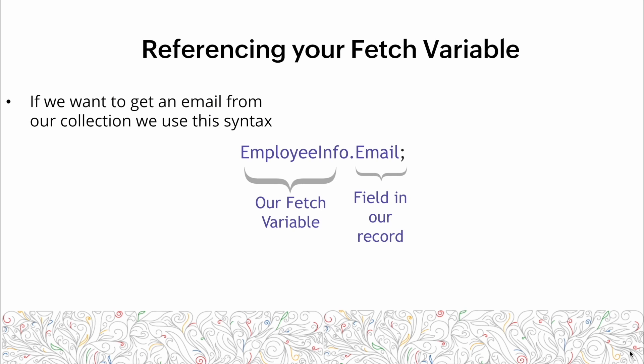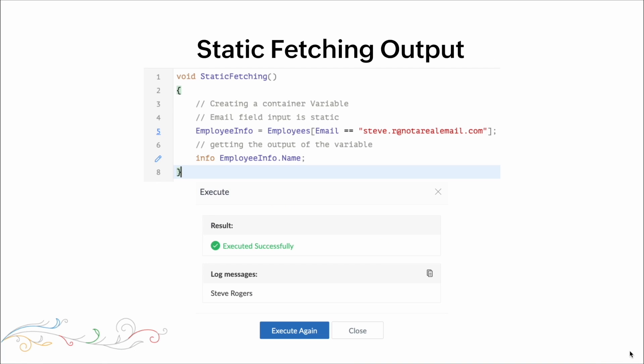After we do that fetch command, we reference our fetch variable. We write out our collection variable, put a dot, and then the field of the record we're trying to pull. Here's the static fetching output: we have a function that fetches the record with the email address, and the result is the name Steve Rogers.